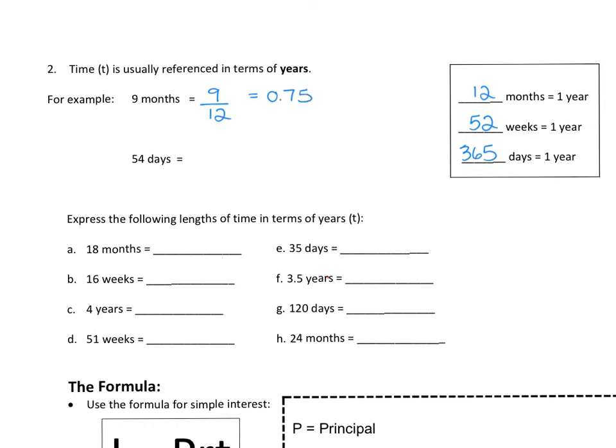For instance, 54 days, it's 54 out of 365 days in a year. Go ahead, punch that into your calculator. I get a number like 0.1479452.